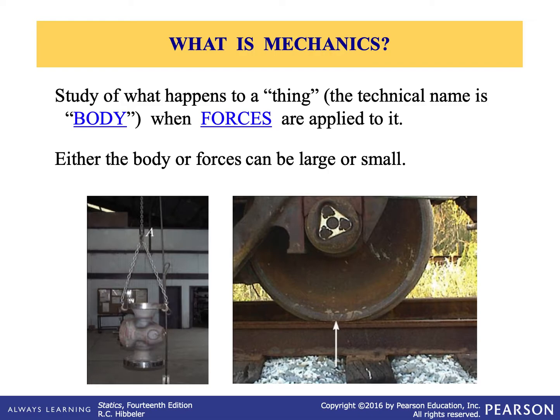In order to be able to analyze our systems, like a train wheel on the track, we need to do something first called idealization. Idealization means we use models to simplify the application of a theory. Idealizations are assumptions to simplify the problem that we are trying to analyze.